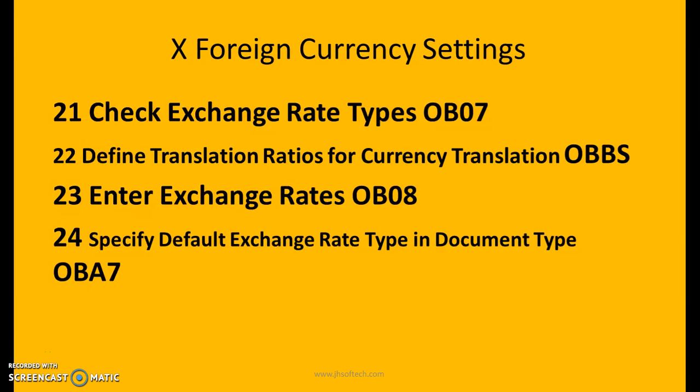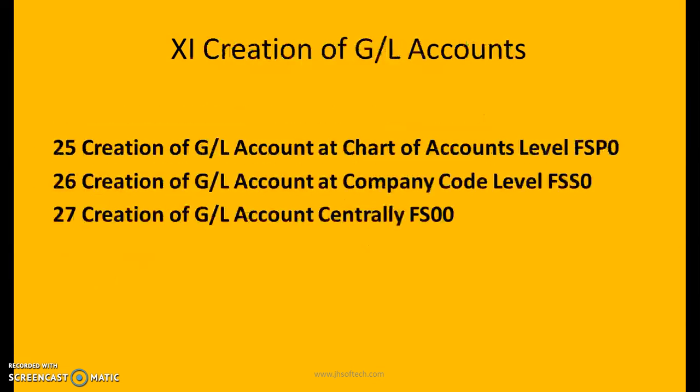Define translation ratio for currency translations: OBBS. Enter exchange rates: OB08. Specify default exchange rate types in document types: OBA7. For creation of GL accounts: at chart of accounts level use FSP0, at company code level use FSS0, and creation of GL account centrally use FS00.